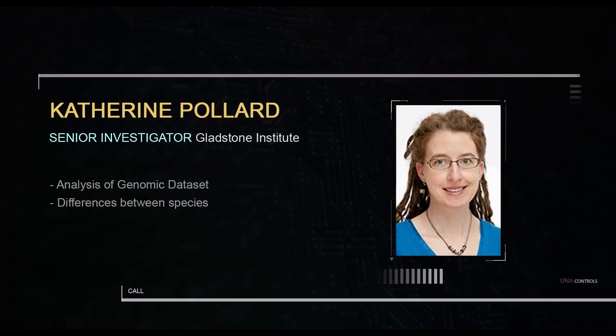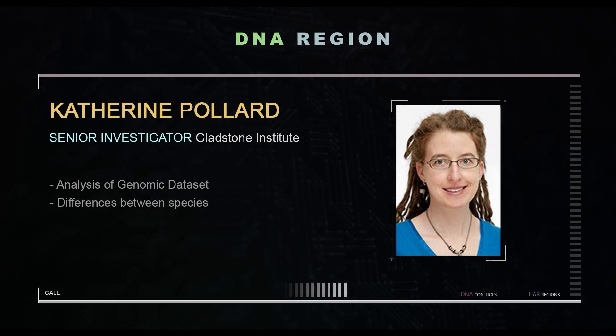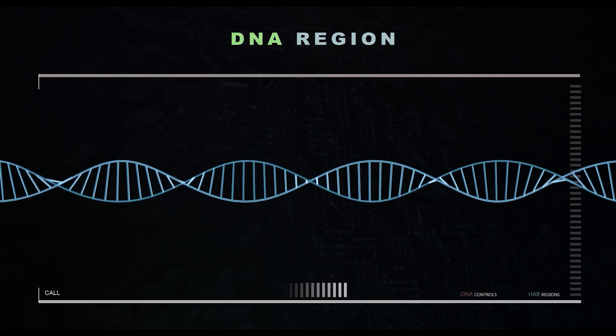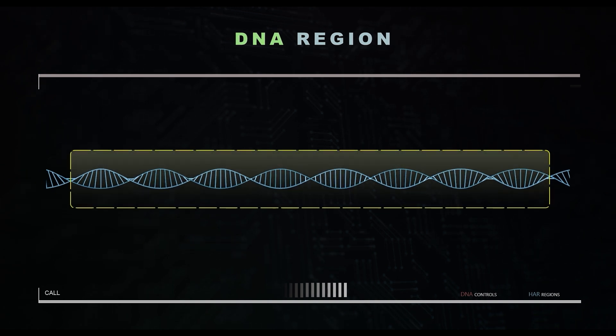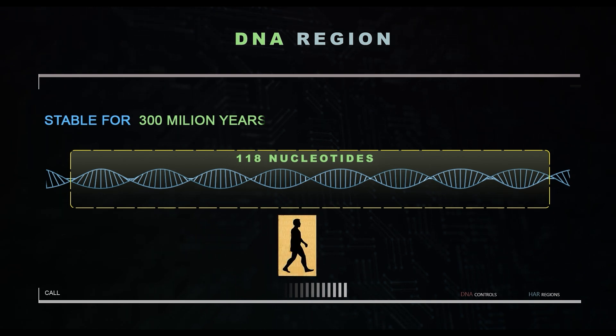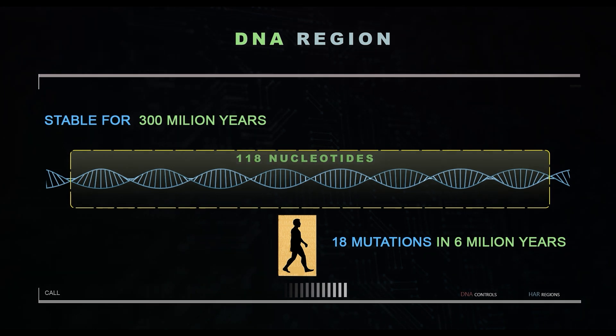Katherine Pollard, the leading researcher at the Gladstone Institute in San Francisco, discovered in 2005 a small region of 180 nucleotides responsible for our brain development. These regions showed 18 mutations within an inexplicable short time frame. It was almost unchanged for 310 million years.